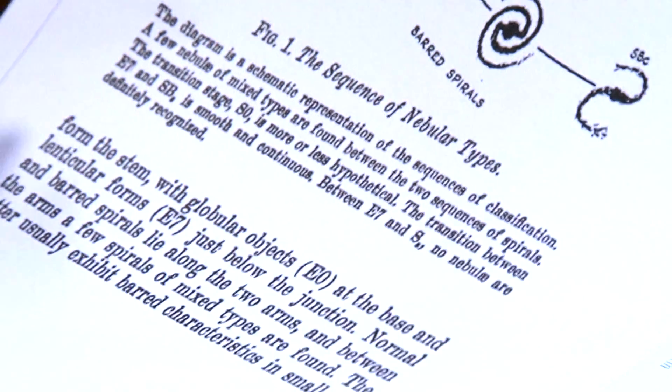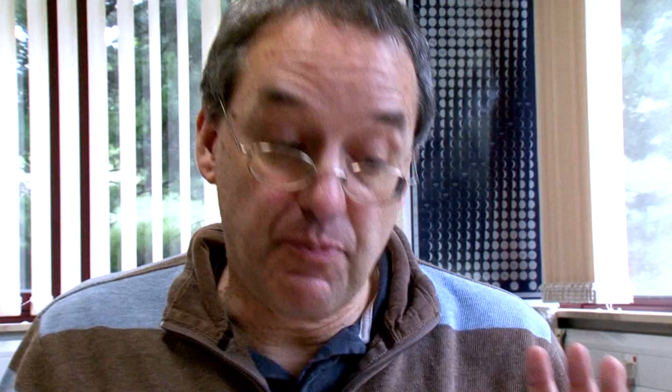Interestingly, by the time Hubble did this in the 1930s, he had kind of given up on these galaxies — he thought they didn't exist. He said the transition stage, S0, is more or less hypothetical. The problem is they're very hard to distinguish from elliptical galaxies. If you happen to see one fairly face-on, it just looks round and smooth — in other words, it just looks like an elliptical galaxy.